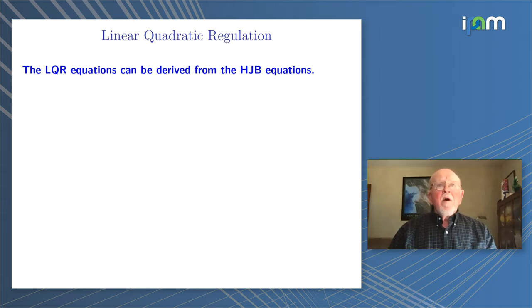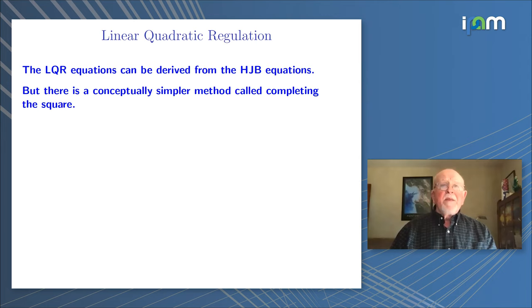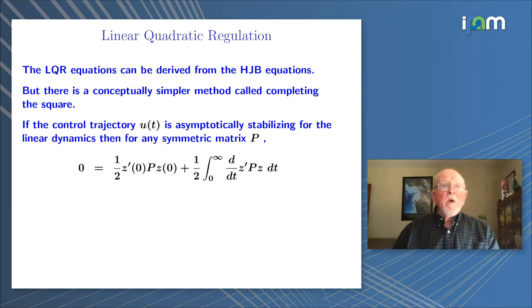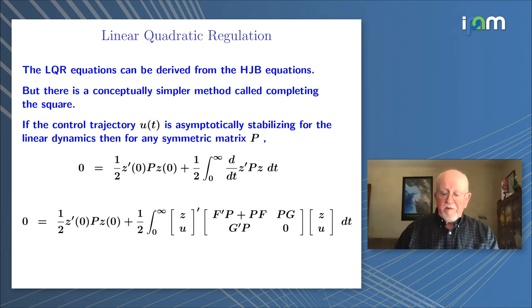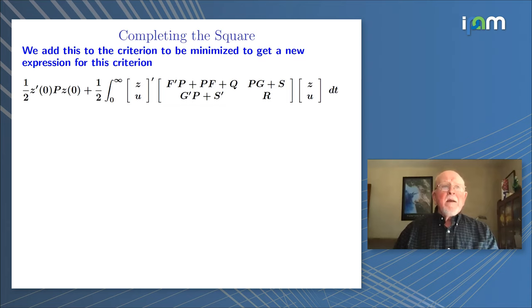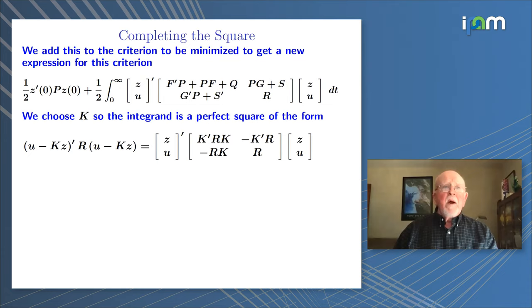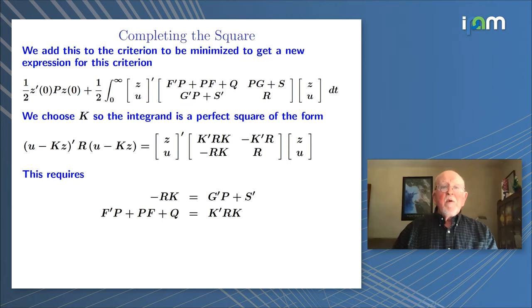The LQR equations can be derived from the HJB equations, but there is a conceptually simpler method called completing the square. If we have some trajectory that is asymptotically stabilizing from Z0, then if we choose any symmetric matrix P, we have this identity. If we expand it out, it takes this form — and this is zero. We can add this to the criterion to be minimized and get a more complicated-looking criterion that is actually simpler in practice. We choose K so that the integrand is a perfect square, and this requires these two equations to be satisfied. These are essentially the same as the LQR equations.